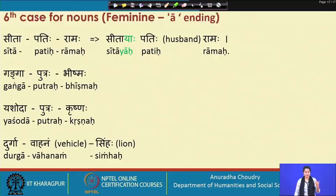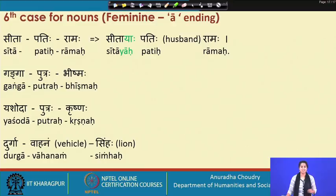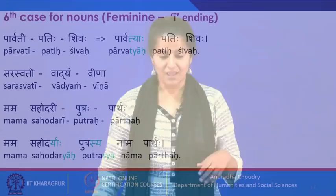For the feminine: sita patihi raamaha — sita is an aa-ending word, so it becomes sitayaah patihi raamaha. A few examples: ganga putraha bhimaha becomes gangayaah putraha bhimaha; yashoda putraha krishnaha becomes yashodayaah putraha krishnaha; durga vahanam simhaha becomes durgayaah vahanam simhaha.